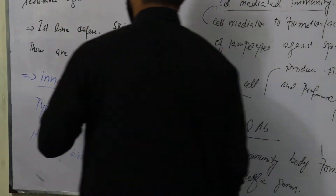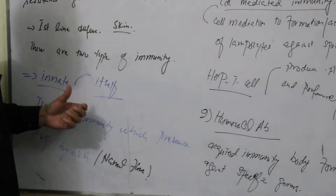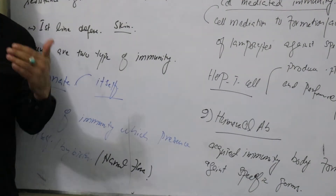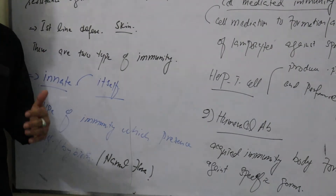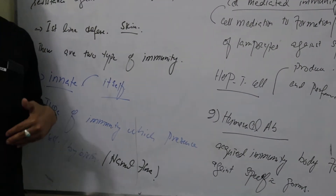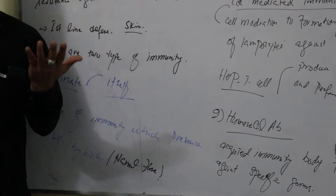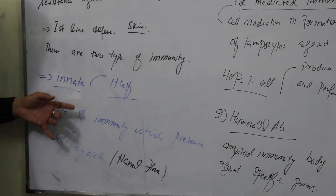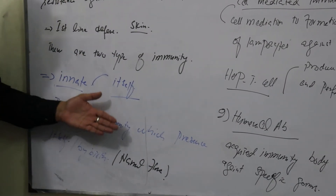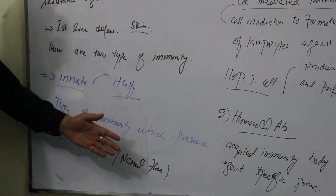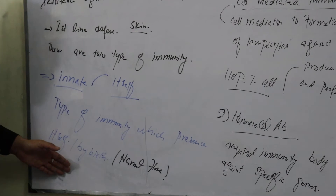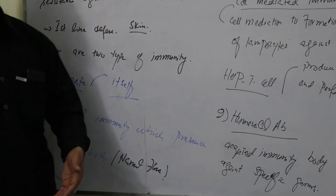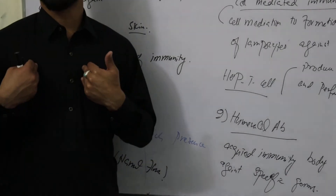The first one is innate immunity. Innate means it is present by itself — it is present from birth. This is a type of immunity which is present in the body by itself from birth.